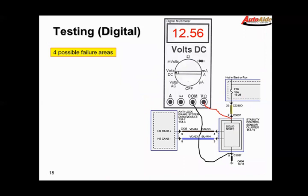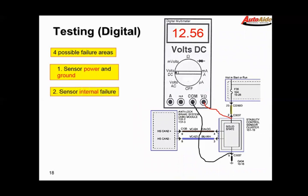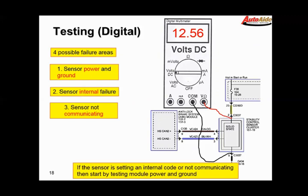Digital sensors are a little bit different. Typically digital sensor diagnostics are code-based, and generally you'll get a sensor corrupt data, sensor not communicating, or something like that. There are four possible failure areas: power and ground, pretty obvious; some kind of an internal failure, which there should be a code for if the sensor is communicating okay; sensor not communicating. So if you have one of these things, the first thing you do is go to the sensor and check and make sure that it's powered and grounded properly.